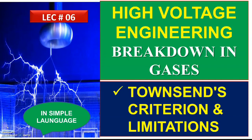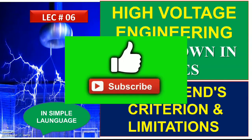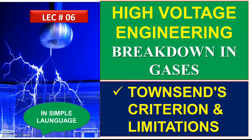Hello dear students. In high voltage engineering, we are covering breakdown in gases, and our today's topic is Townsend's Criterion and Limitations. We talked about Townsend's Theory in the last class, and now we talk about the conditions where Townsend's theory failed, and after that, streamer theory came into evolution.